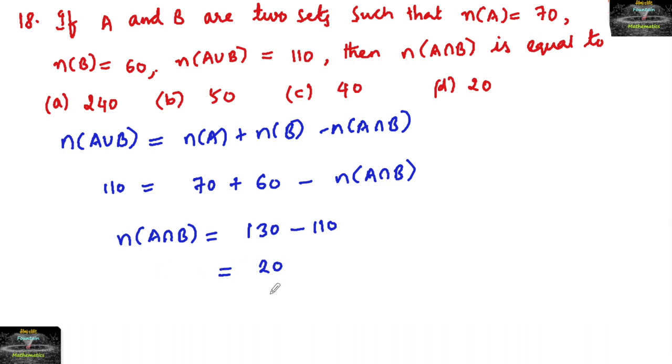So N(A∩B) = 20. We can also solve it by Venn diagram.